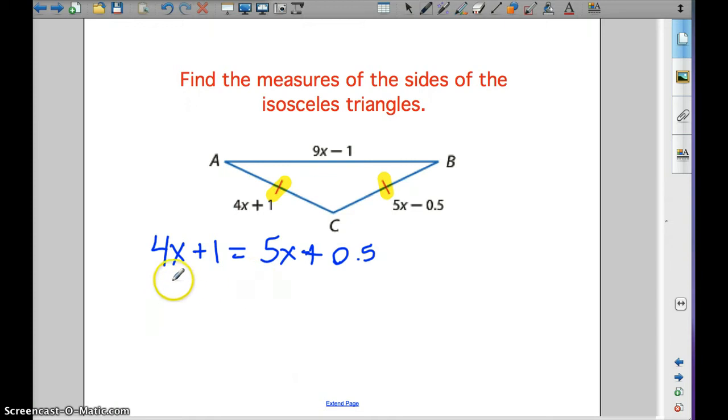We're going to subtract 4x from both sides—oh, I wrote that down wrong. It's minus 0.5, so I'm going to add 0.5 to both sides. Now we have 1.5 = 1x, or x = 1.5. But is that what the question is asking?